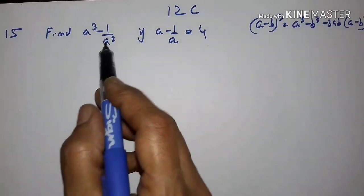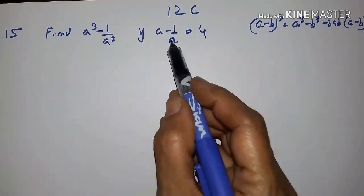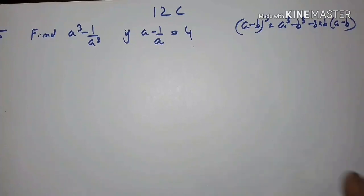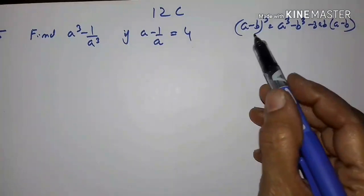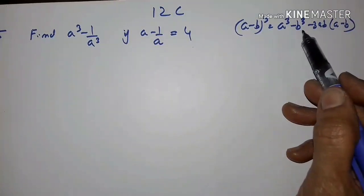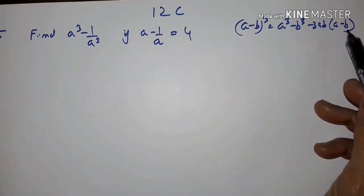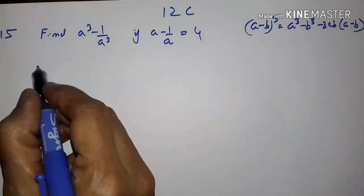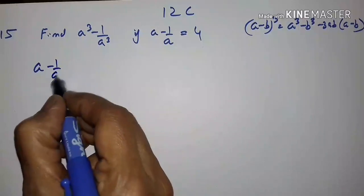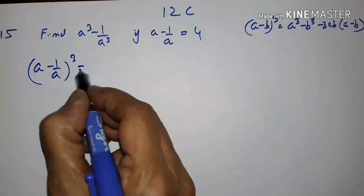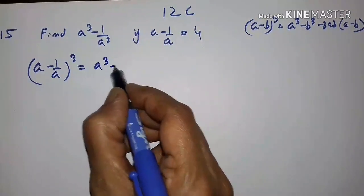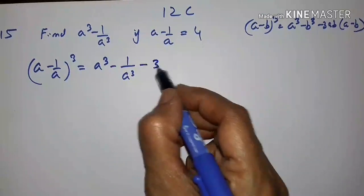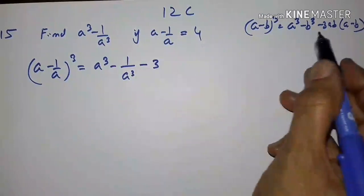15th problem: we have to find a cubed minus 1 upon a cubed, given that a minus 1 upon a is equal to 4. We use the formula: a minus b, the whole cube, equals a cubed minus b cubed minus 3ab into (a minus b).